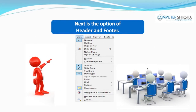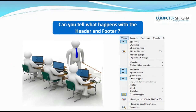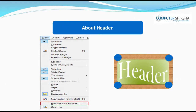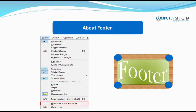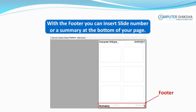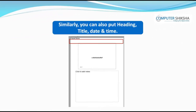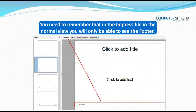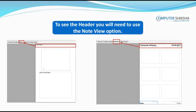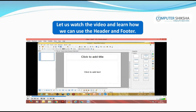Next is the option of Header and Footer. As you have earlier learnt in the writer modules, with the header you can insert a heading, summary, or a title at the top of your page. With the footer, you can insert page number or a summary at the bottom of your page. Similarly, on Impress also, with the header you can put a heading, title, date and time, and with the footer you can get slide number and any summary. However, you need to remember that in the impress file, in the normal view, you will only be able to see the footer. To see the header, you will need to use the note view option.